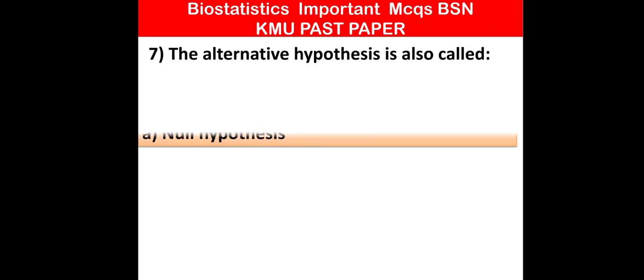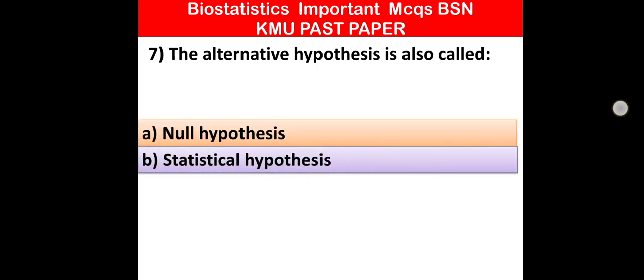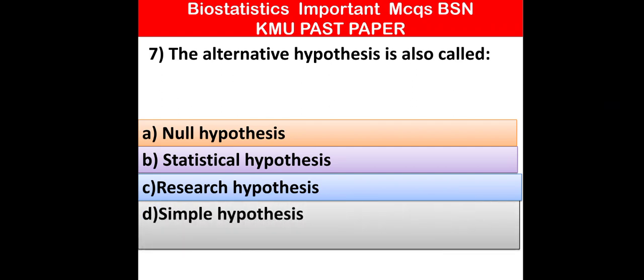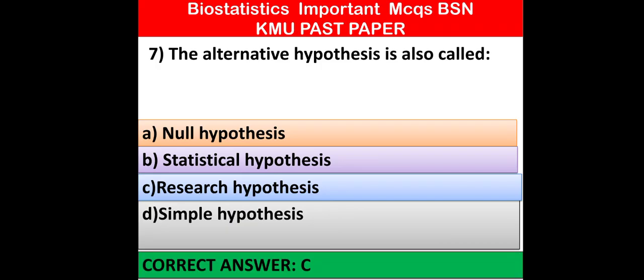MCQ number 7: The alternative hypothesis is also called — null hypothesis, statistical hypothesis, research hypothesis, or simple hypothesis. The second name of the alternative hypothesis is also known as — which one of the following is correct? Option C is correct: research hypothesis.